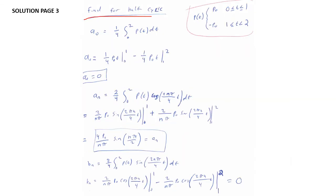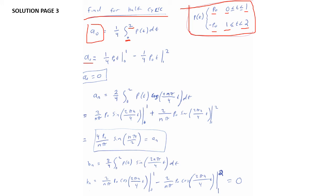Now let's evaluate these for a half cycle from 0 to 2. Looking at our graph, p(t) equals p-naught from t=0 to t=1, and −p-naught from t=1 to t=2. For a₀, integrating over the half cycle: a₀ = (1/4)·p-naught·t evaluated from 0 to 1, minus (1/4)·p-naught·t from 1 to 2. These terms cancel, so for the half cycle, a₀ = 0.